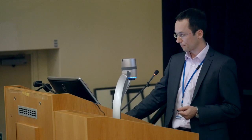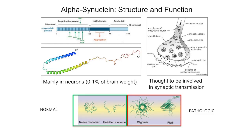Alpha-synuclein is a protein with a basic sequence of 140 amino acids. There are three sections of the protein that are subdivided and that in some way affect its function. These 140 amino acids fold into a three-dimensional structure. What this is known as is the native monomer — the basic unfolded form of alpha-synuclein, as you might find it in the cell when it's not doing anything, just sitting there.